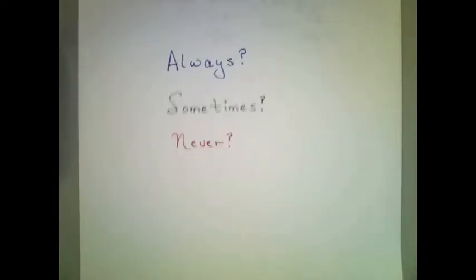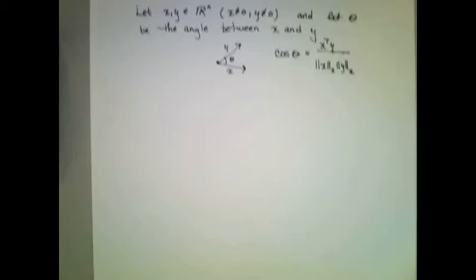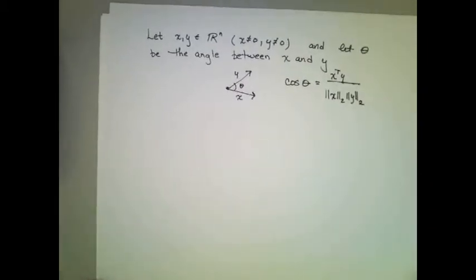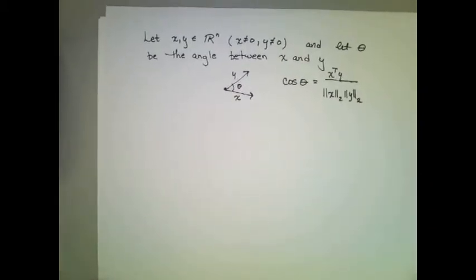Always, sometimes, or never. If we have two vectors, x and y, that are not zero, and theta is the angle between these vectors, is it always, sometimes, or never true that the cosine of theta is equal to the dot product of x with y divided by the length of x times the length of y?